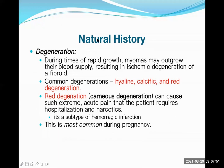Leiomyomas can also degenerate — meaning death of the cells. This is an important pathological term. During times of rapid growth, myomas may outgrow their blood supply, resulting in ischemic degeneration. This can happen to any tumor growing very fast, because the blood supply may not be enough for that growth, resulting in ischemia.